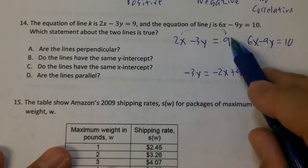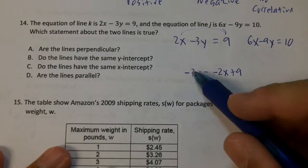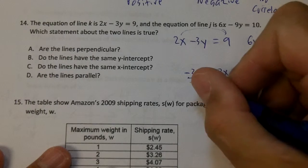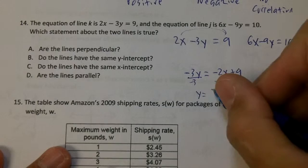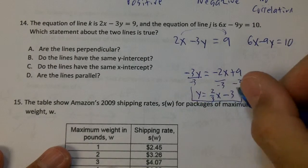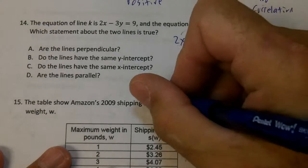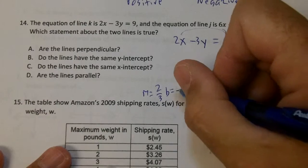So when I move that 2x to the right, it's going to go from a positive to a negative. Now then to get the y by itself, I'm going to divide by negative 3. And I'll end up with y equals 2 over 3x minus 3. So I know my slope is 2 over 3, and my y-intercept is negative 3.